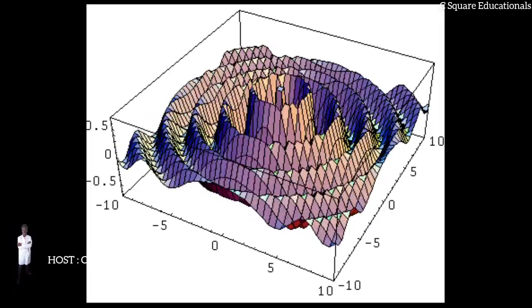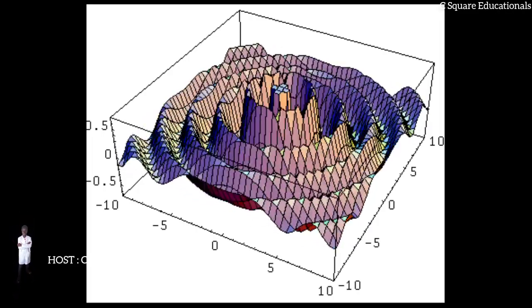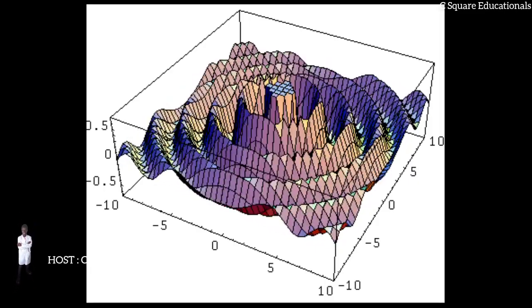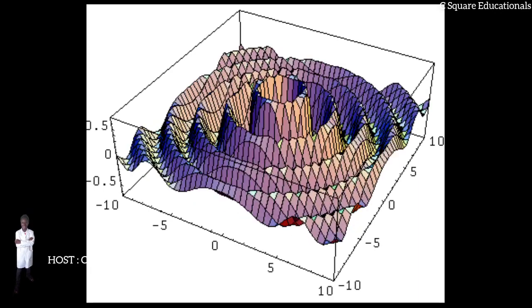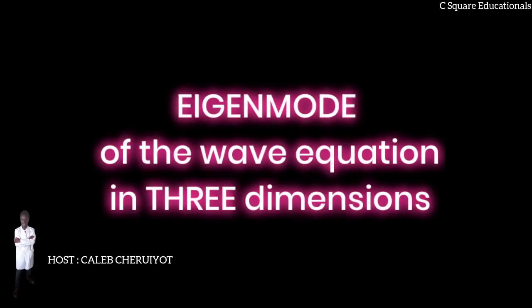Although the word monochromatic is not exactly accurate, since it refers to light or electromagnetic radiation with a well-defined frequency, the spirit is to discover the eigenmodes of the wave equation in three dimensions.